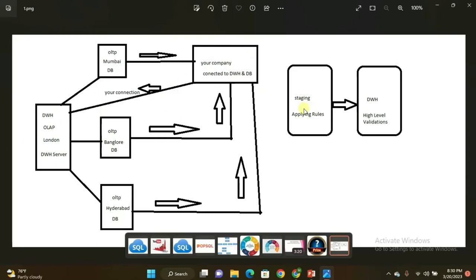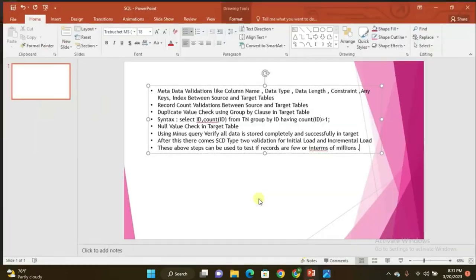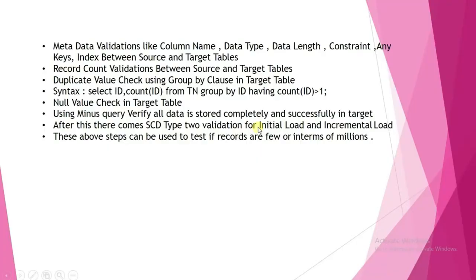You apply business rules like data cleansing — removing duplicate rows, null values, constraint issues, and missing data. The extracted data is not perfect, so some data will be missing or duplicated. Those are corrected in staging by applying business rules and logics, then loaded into the data warehouse. High-level validations are then performed there. The high-level validations include metadata validations: column name, data type, data length, constraints, keys, and indexes between source and target tables.